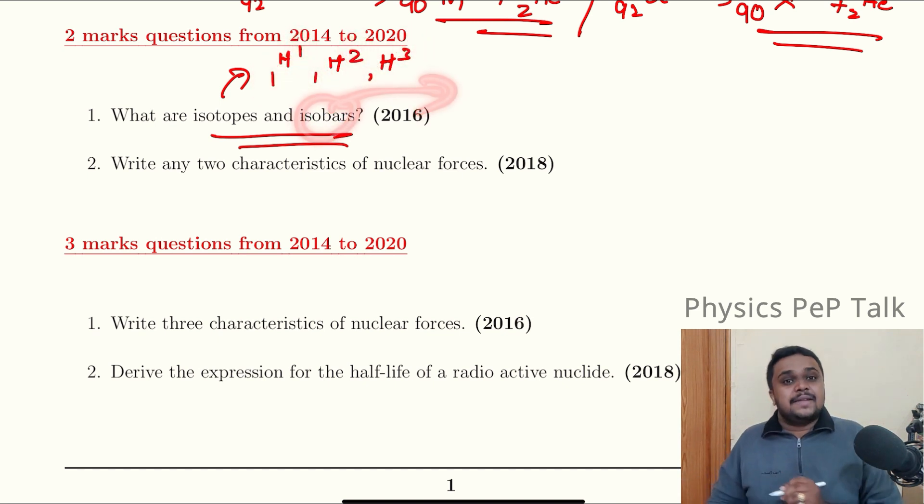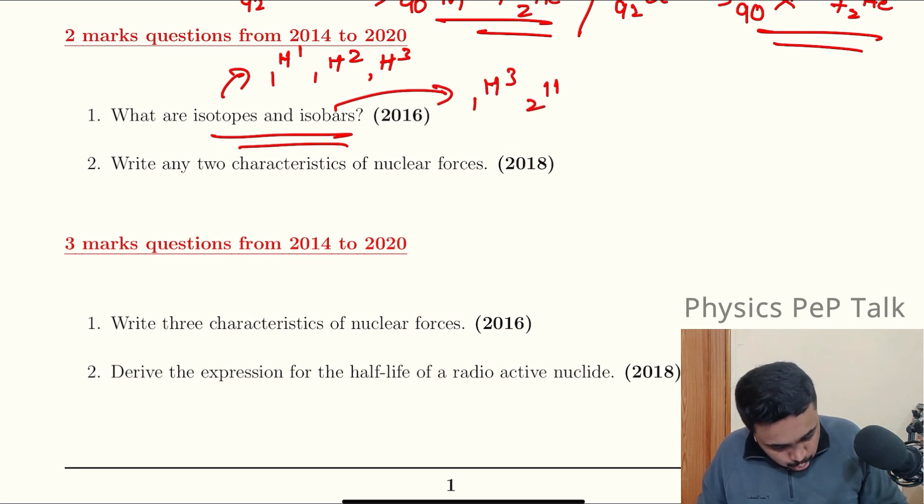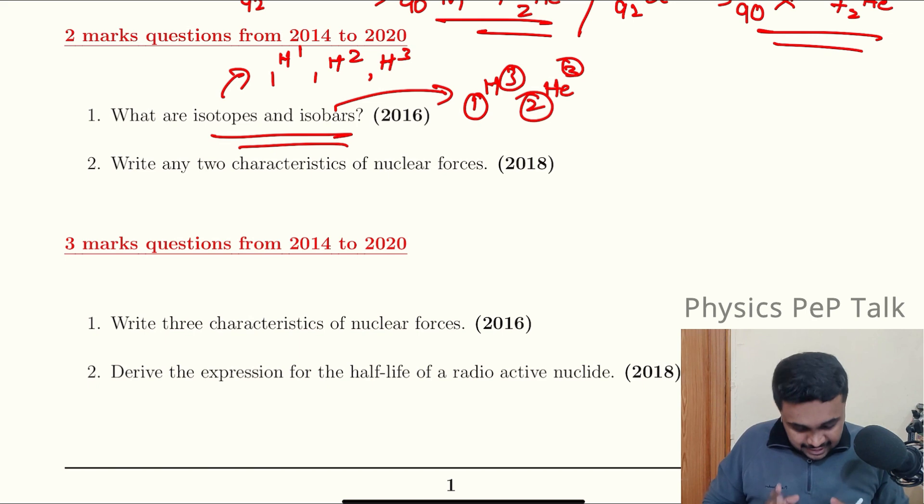What are isobars? Nuclei having same mass number but different atomic number. For example, 1H3 and 2He3. Here the mass number is same, but the atomic number is different. That is isobars.